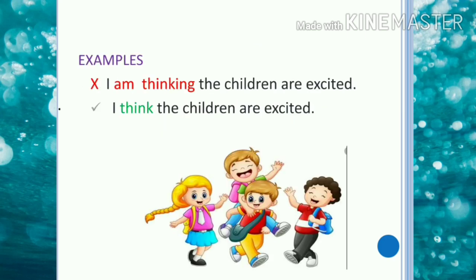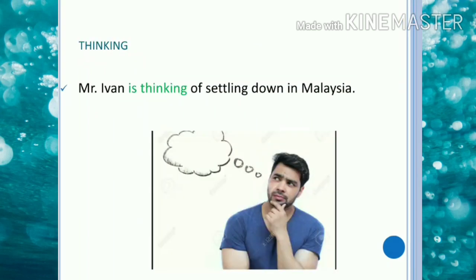Let us look at some examples to understand this better. 'I am thinking the children are excited' is grammatically incorrect because the main verb 'think' is not normally used in continuous tense. Hence the correct usage is 'I think the children are excited.' However, 'Mr. Ivan is thinking of settling down in Malaysia' is correct, because here it means Mr. Ivan is considering the idea of settling down in Malaysia.